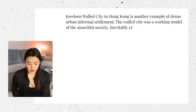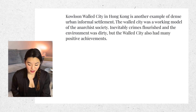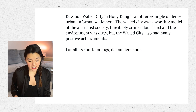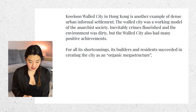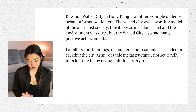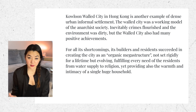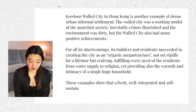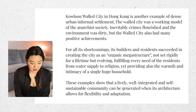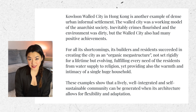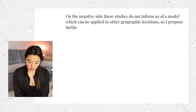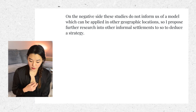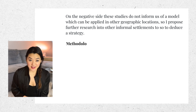Torre David represents the potential and possibilities of the unfinished and challenges us to create open, flexible structures. Kowloon Walled City in Hong Kong is another example of dense urban informal settlements. The Walled City was a working model of an anarchist society — inevitably crime flourished and the environment was dirty — but it also had many positive achievements. For all its shortcomings, its builders and residents succeeded in creating the city as an organic megastructure, not set rigidly for a lifetime but evolving, fulfilling every need of the residents from water supply to religion, yet providing the warmth and intimacy of a single huge household.